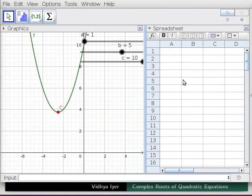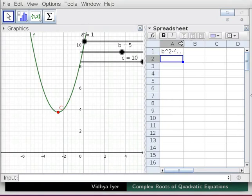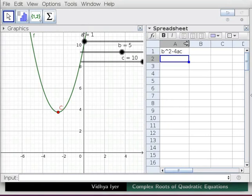Drag the boundary to see spreadsheet view properly. Type the following labels and formulae in the spreadsheet. In cell A1 type within quotes b^2 - 4ac and press enter.